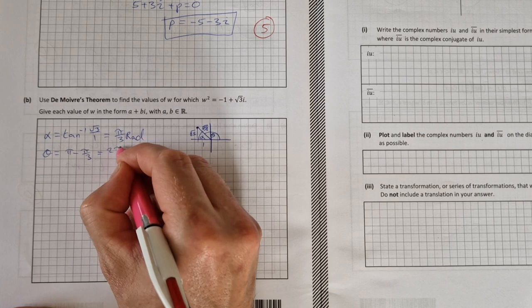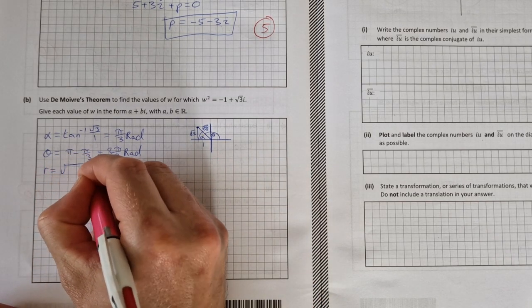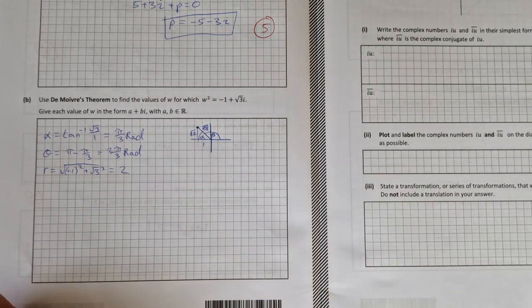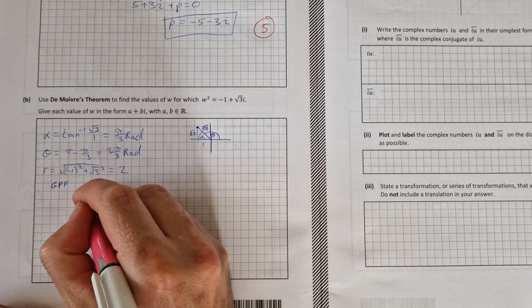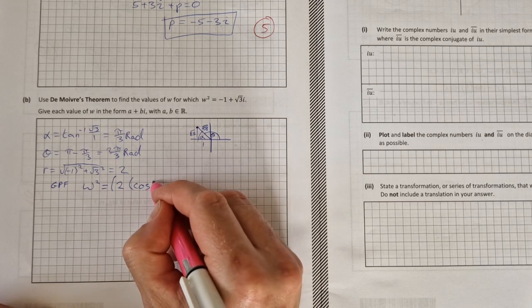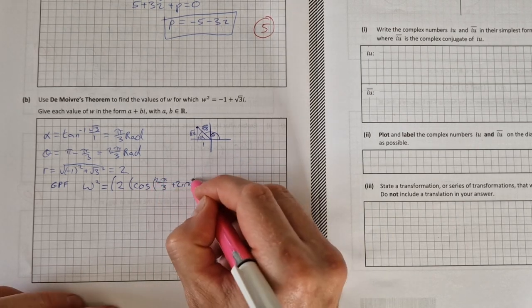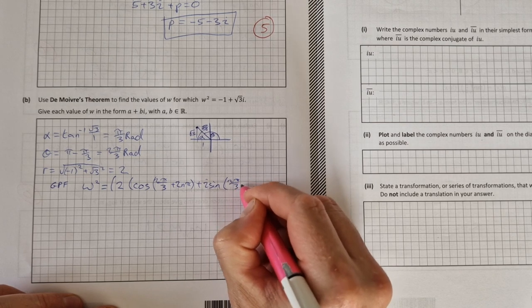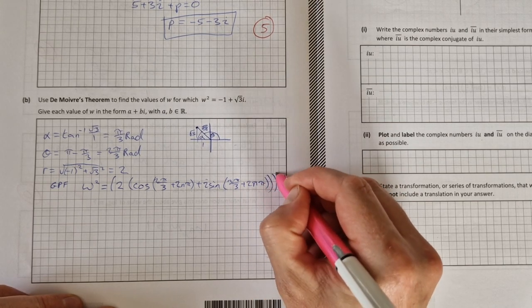And then to find our modulus r, r equals the square root of minus 1 squared plus root 3 squared. So that's equal to 2. So r equals 2. Now I can write this in general polar form. So general polar form, I have omega squared equals 2 times cos of (2 pi over 3 plus 2n pi), in brackets.